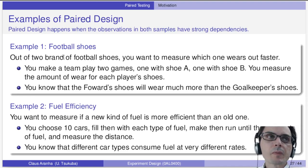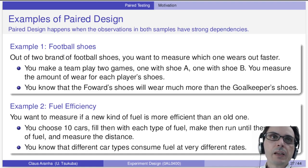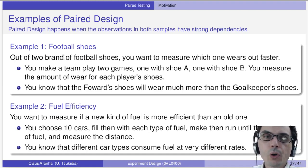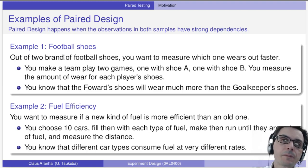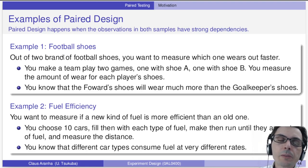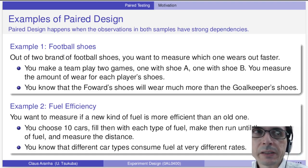Let me give you two examples. The first is about football shoes. Imagine you want to compare two brands of football shoes and see which one wears out faster. You have a team play two games — in one game wearing shoe A, in the other wearing shoe B — and measure the amount of wear in each player's shoes. The wear is not the same for all players: a forward runs a lot, but the goalkeeper stays in one place, so the goalkeeper's shoes wear much less.